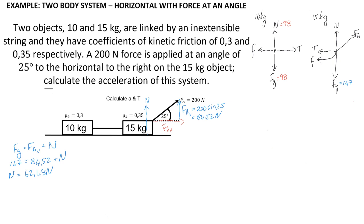Once we have the normal forces, we can calculate the friction force acting on each object. For the 10 kilogram object, friction equals the coefficient of friction times the normal force: 0.3 × 98 = 29.4 newtons. For the 15 kilogram object, friction equals 0.35 times the normal force of 62.48, giving a friction force of 21.87 newtons.